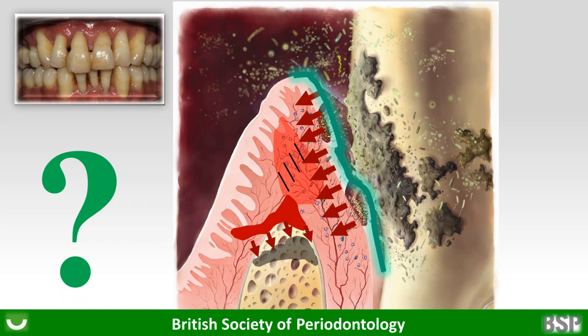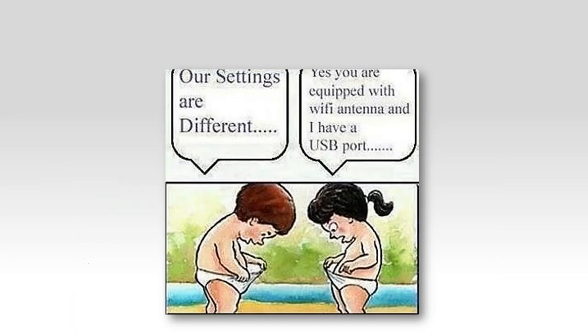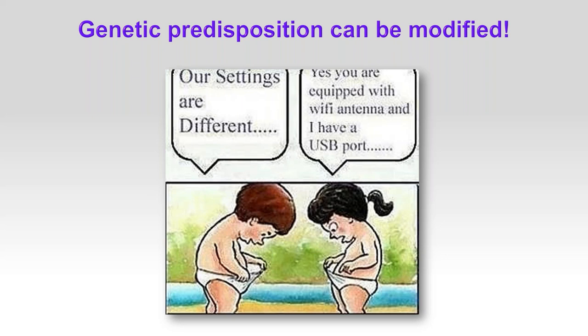There's a genetic predisposition that doesn't always translate to disease, but increases the likelihood if behaviour, lifestyle, or environment is not where it needs to be. The good news is that regardless of your genetic predisposition, it is possible to modify things and ensure genetics doesn't always translate through into clinical events.